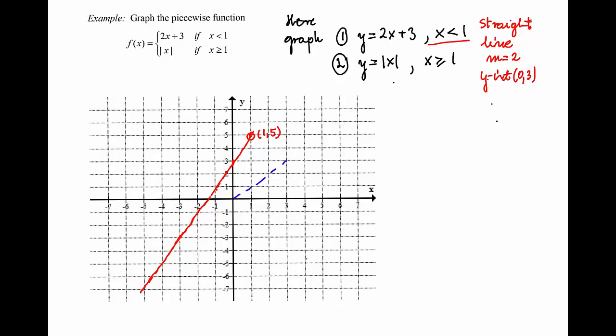Now for the second equation, which represents the absolute value function. You should be able to recognize this function — it has diagonals in the first and second quadrant. We are using only the part of the graph that corresponds to x greater or equal to 1. So I find the point on the graph at x equal 1, which is the point (1, 1). This point is on the graph of f(x) because we are using x equal 1 in this formula.